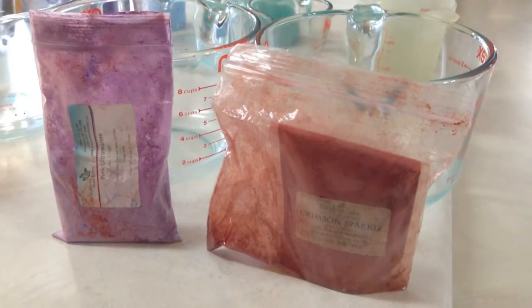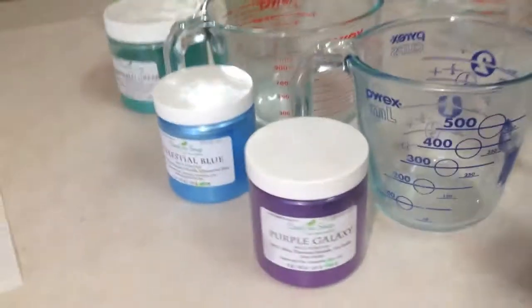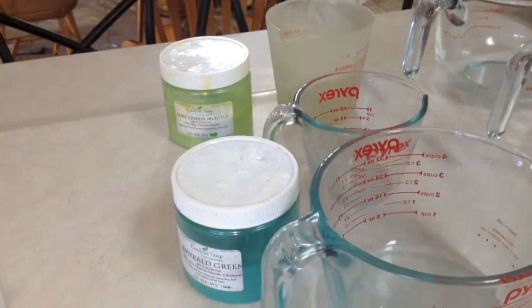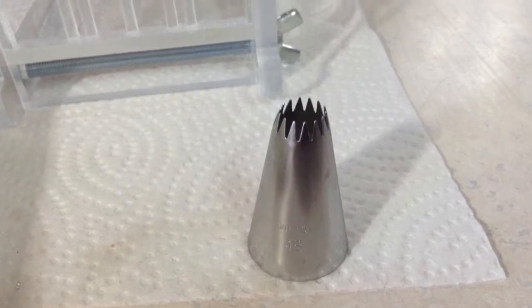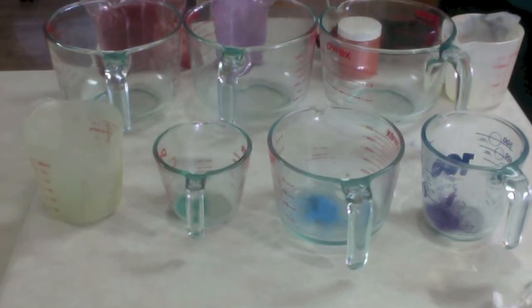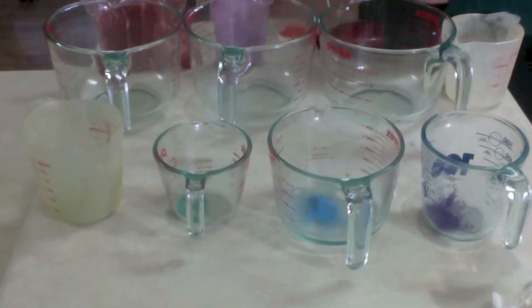Here are my colors: crimson sparkle mica, pink ultramarine, adobe orange mica, yellow canary, purple galaxy mica, celestial blue, emerald green, and lime green mojito. So I'm pre-measuring out my colorants here. So if this starts to move fast, I'm ready to also move fast. I don't have to open things. I'm ready to go.